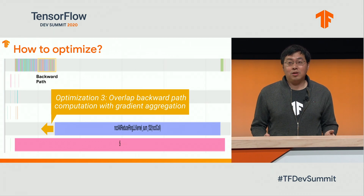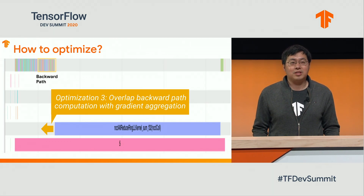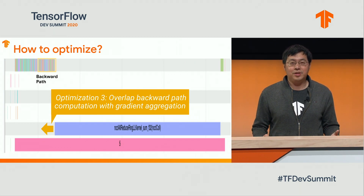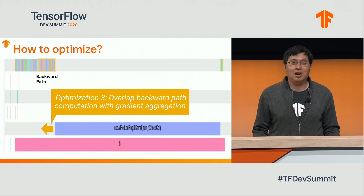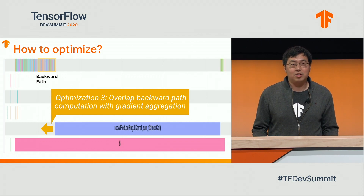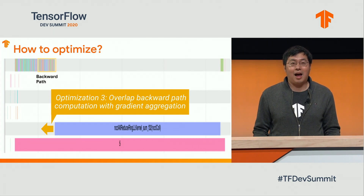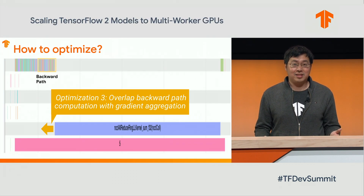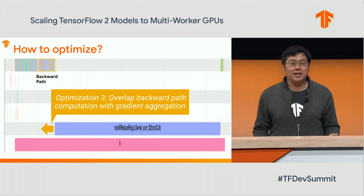For the third optimization: if you notice that NCCL AllReduce exchanges data across the network and doesn't use the GPU itself very much, you see empty space above the blue bar. So can we push the NCCL AllReduce forward a bit so that it overlaps with the GPU computation happening in the backward pass? This way we can reduce GPU idle time and improve training step time. These are the three ideas, and I'm going to show how to implement them using TensorFlow 2.2.